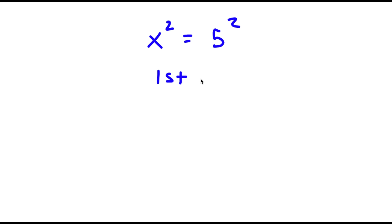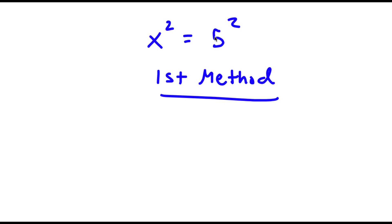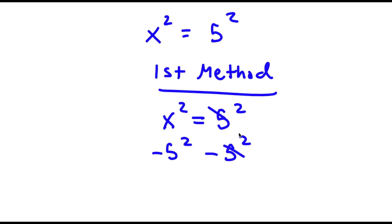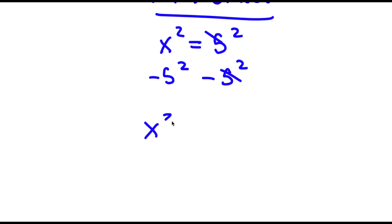So for my first method, first start with x to the power of 2 is equal to 5 to the power of 2. Now I'm going to be dividing both sides by 5 to the power of 2. So then these two cancel out, and I'm left with x to the power of 2 minus 5 to the power of 2 is equal to 0.